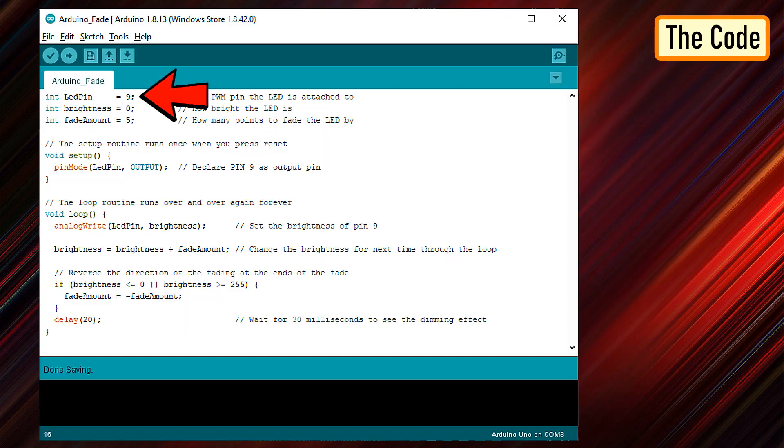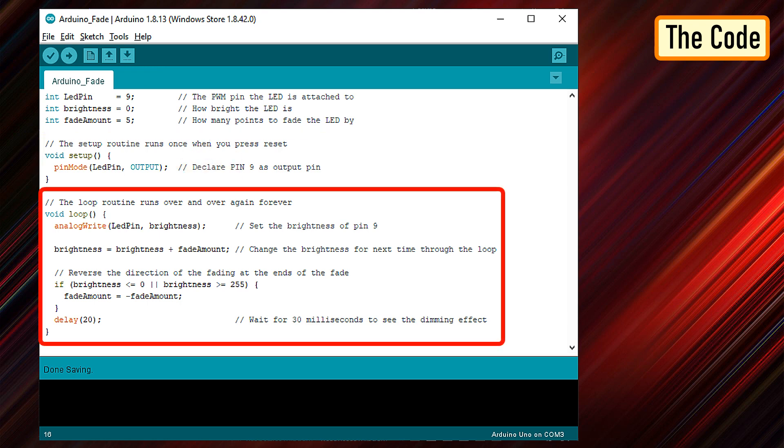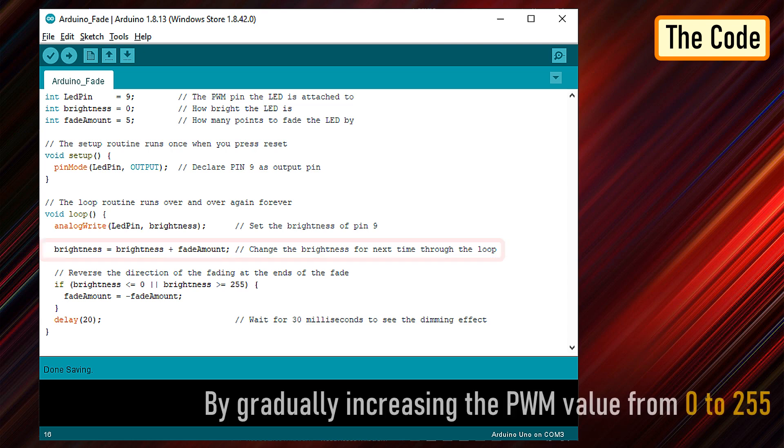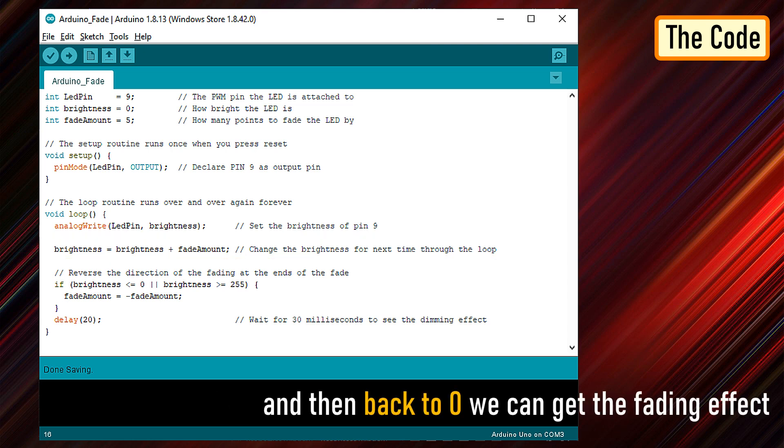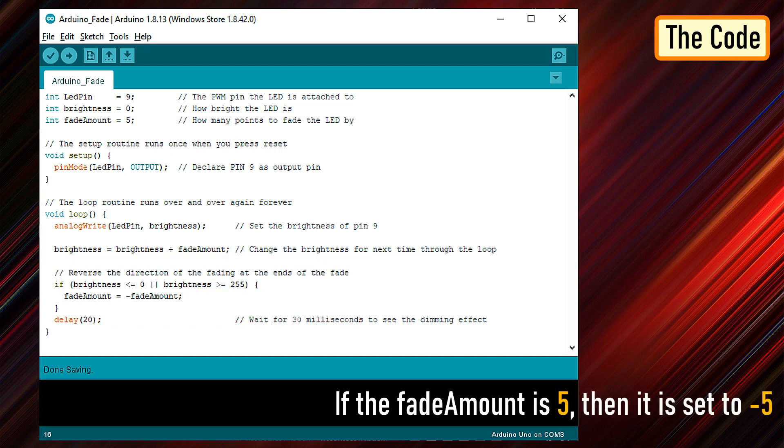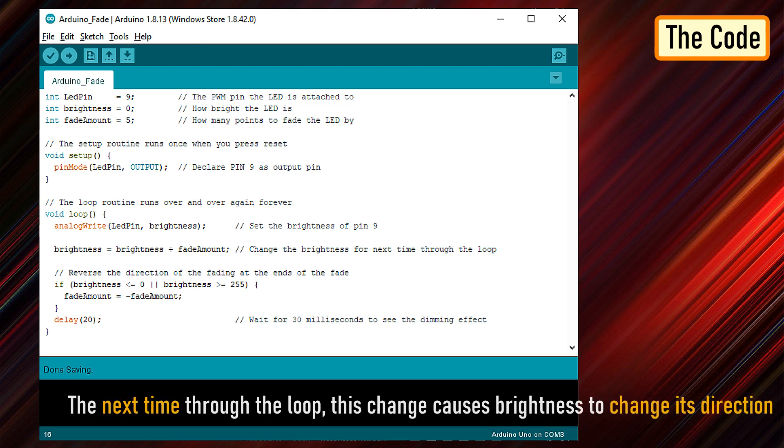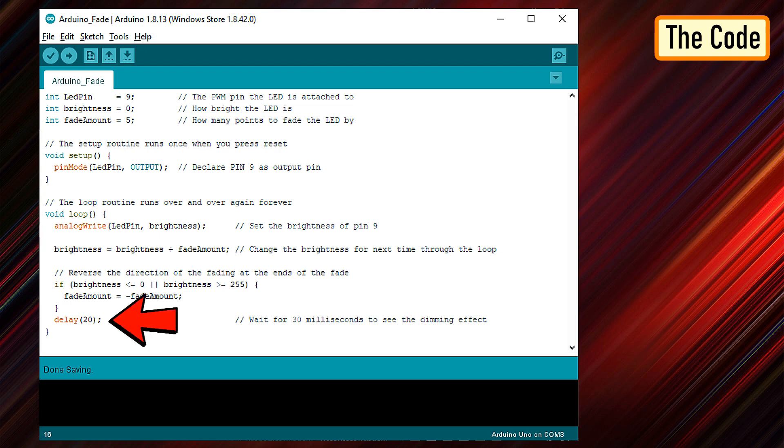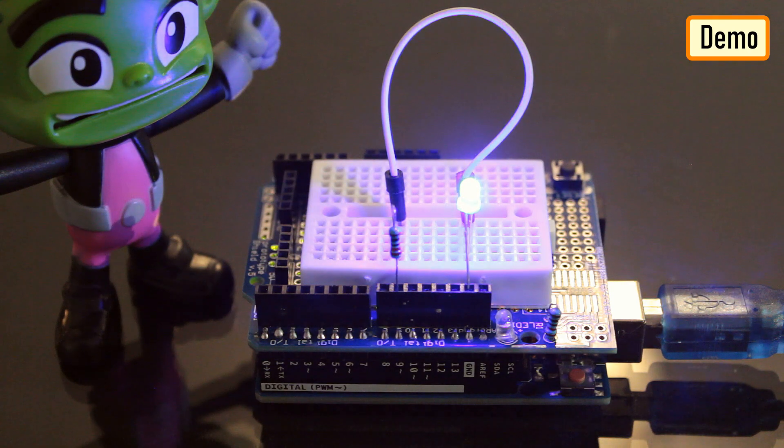After declaring pin number 9 as LED pin and setting up the pin mode in the setup section, we are going to loop through and dim the LED in the loop section. By gradually increasing the PWM value from 0 to 255 and then back to 0, we can get the fading effect. In this sketch, the PWM value is set using a variable called brightness. Each time in the loop it increases by the value of the fade amount. If brightness is at either extreme of its value, 0 or 255, then the fade amount is changed to its negative. So if it is 5, it's set to minus 5, and if it is minus 5, it is set to 5. The next time through the loop, this change causes the brightness to change its direction. A delay is added to control the speed of the fading effect. So this is how it looks like.